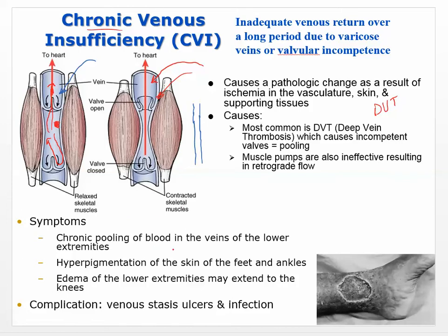Symptoms of chronic venous insufficiency include chronic pooling of blood in the veins of the lower extremities. You might see hyperpigmentation of the skin of the feet and ankles, and edema of the lower extremities, which may extend all the way up to the knees. Complications include venous stasis ulcers because you're not getting oxygen or nutrient flow to those areas — toxins build up, which can cause ulcers and infection.